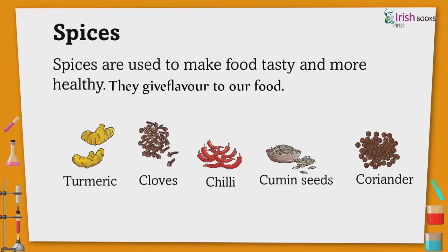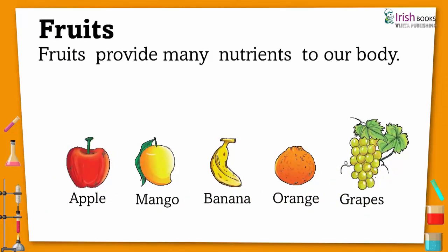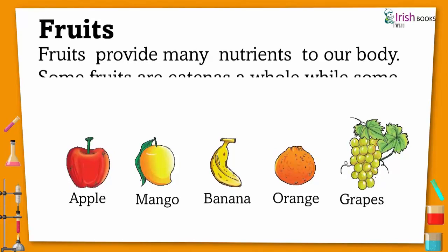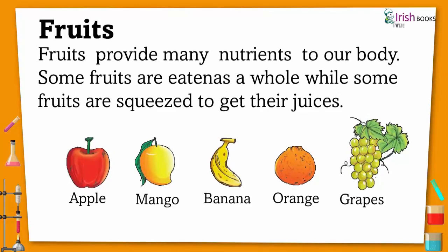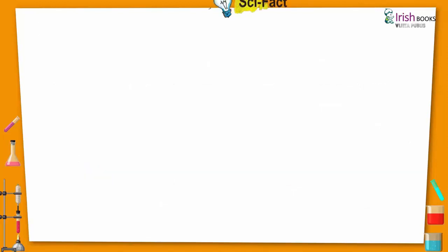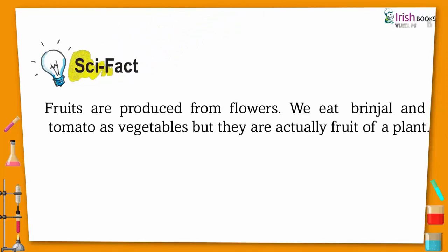Spices include turmeric, cloves, chili, cumin seeds, and coriander. Fruits provide many nutrients to our body. Some fruits are eaten as a whole, while some fruits are squeezed to get their juices, like apple, mango, banana, orange, and grapes.